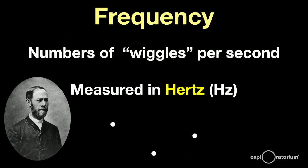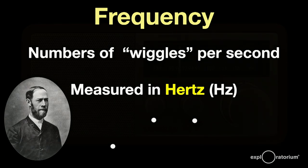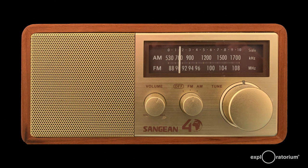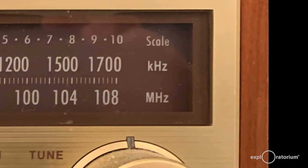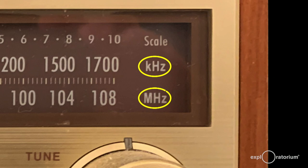The left dot you see here has a lower frequency, the middle dot a medium frequency, and the right dot a higher frequency. You may be familiar with hertz if you've listened to music on a radio. AM radio is measured in kilohertz — thousands of vibrations per second — and FM is measured in megahertz — millions of vibrations per second.